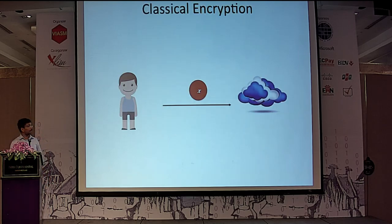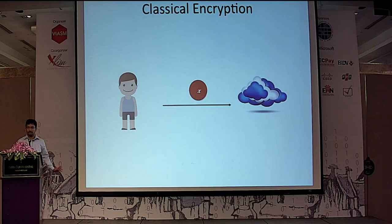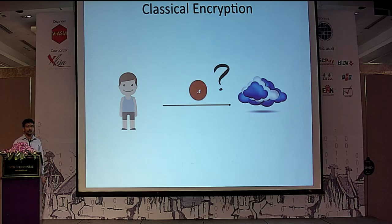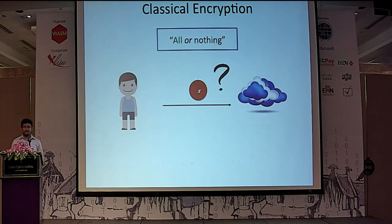Before we move on to what the problem is, let's look at classical encryption. Say there is some user Bob who has some data X, he encrypts it and sends it over to some cloud — the red blob denotes the ciphertext. If the cloud has the secret key, it can recover the plaintext message X in the clear. But if it does not have the secret key, it learns nothing at all. This is the classical all-or-nothing paradigm.